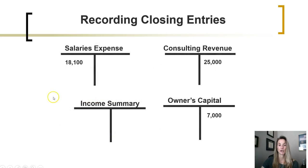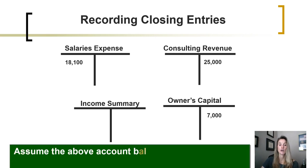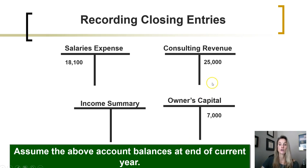Let's assume at the end of the accounting period, the company in their general ledger reports one expense with an ending balance of 18,100, a revenue account with an ending credit balance of 25,000, and an owner's capital balance of 7,000. During the accounting period, any revenue transactions and expense transactions had been recorded into revenue and expense accounts — they were not recorded directly into the owner's capital equity account. These are the balances at the end of the year, and we need to close out revenue, expenses, as well as the drawings account. The drawings account is not shown here, but we'll get to that in a minute.